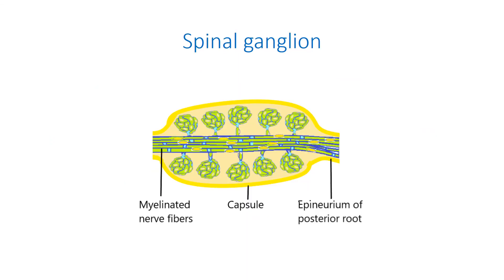Sensory ganglia. Sensory ganglia of cranial and spinal nerves consist of pseudo-unipolar neurons surrounded by satellite cells. Only sensory ganglia of the eighth cranial nerves consist of bipolar neurons also surrounded by satellite cells. Sensory ganglia have a connective tissue capsule from which connective tissue penetrates their depths, dividing neurons into groups.